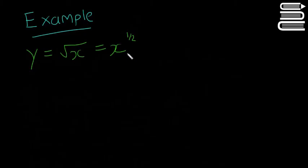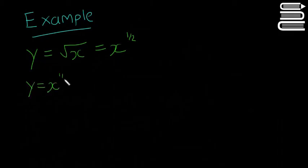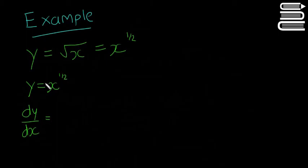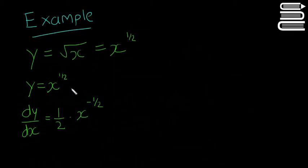We have videos on those as well if you want to look at those. So y is equal to the square root of x — that's the same thing as y is equal to x to the power of a half. So we just rewrite that: y is equal to x to the power of a half. Now if we want to get our dy/dx, it's going to be the same as normal — you're going to bring your half down and multiply it by x to the power of minus a half.